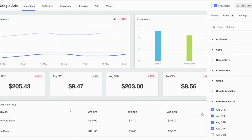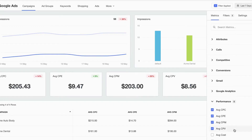Google says that with Performance Max, they recorded a 22% increase in conversions and a 20% reduction in overall CPA across the account.